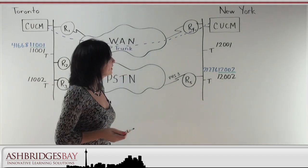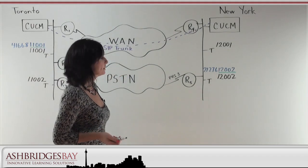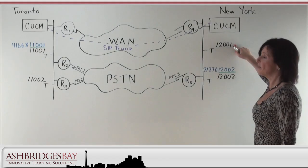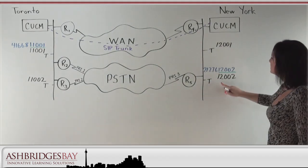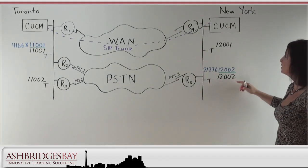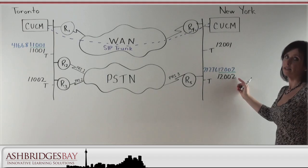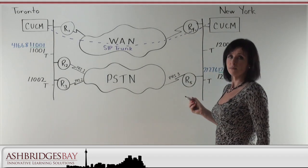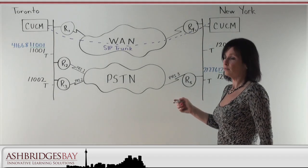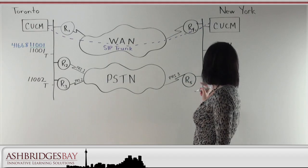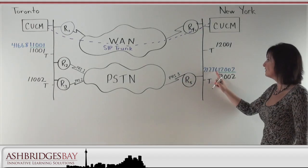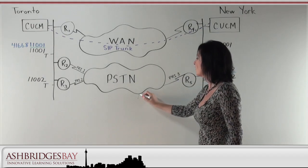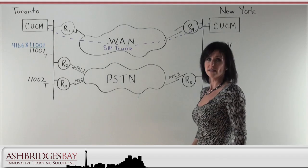Let's have a look at an example of how dialing works. If I was calling from this number here, I would simply dial 12002 and I would get an inter-office call. But if someone is calling you from a local phone, they would have to dial 212-761-2002 if they are calling you through the PSTN.